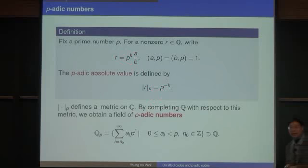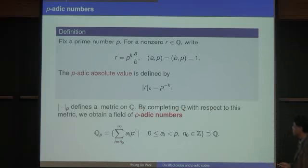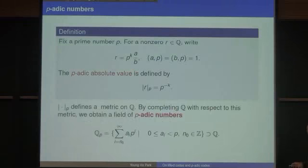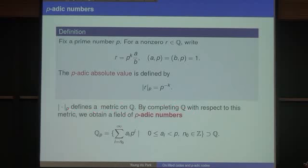For example, the 2-adic absolute value of 2 is one-half, and the 2-adic absolute value of one-half is 2. This defines a metric on Q, and we can complete Q with respect to this metric. We obtain the field of p-adic numbers, which is the set of power series in p, but there can be negative powers.